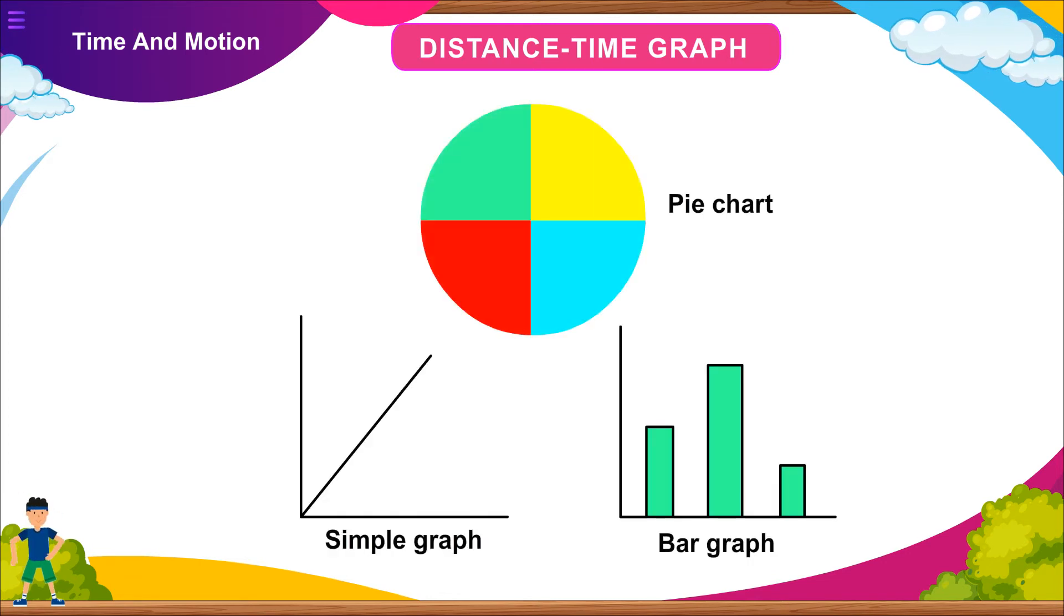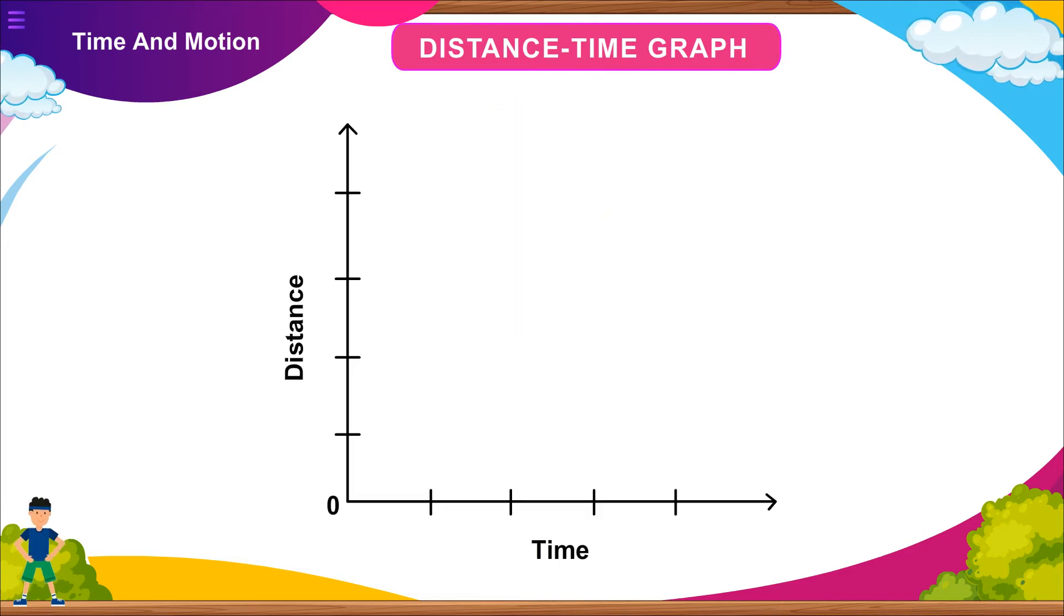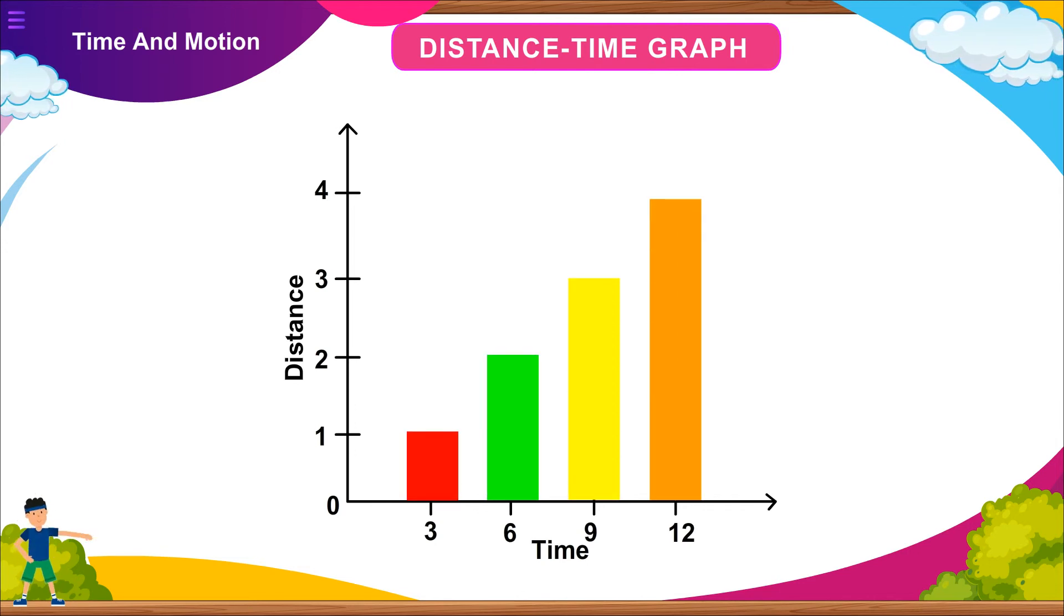Distance-time graph: There are various ways of representing data graphically. They may be in the form of a bar graph or a pie chart. Using the graph given here, find the speed at position E at one second from start. Solution: Speed equals distance upon time equals 3 meter per second. If the graph is a straight line extending from zero, it represents uniform motion. Observe the graph here and see that the body covers equal distance in equal intervals of time. These are the characteristics of uniform motion.